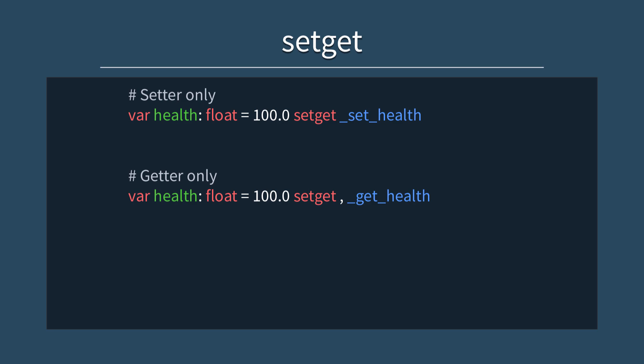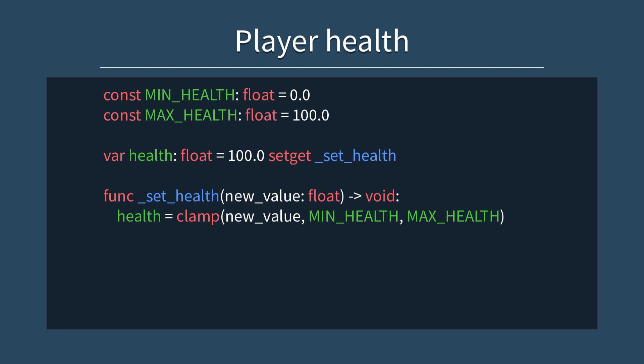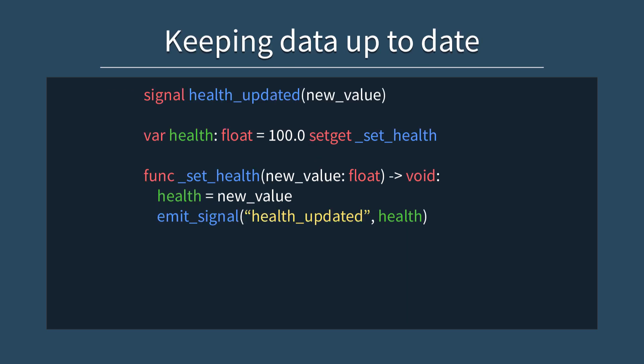So why care about this? As an example, let's say we have a game where the player's health should always be a float between 0 and 100. Using a setter, we can make sure the value is clamped before being applied to the variable, such as in this code snippet. Another common use includes emitting a signal every time a value is updated, so that other objects that depend on that data can always be up to date. You could also run logic to make sure data being passed into the variable is of the right type, throwing an error if it's not and refusing to set the variable.